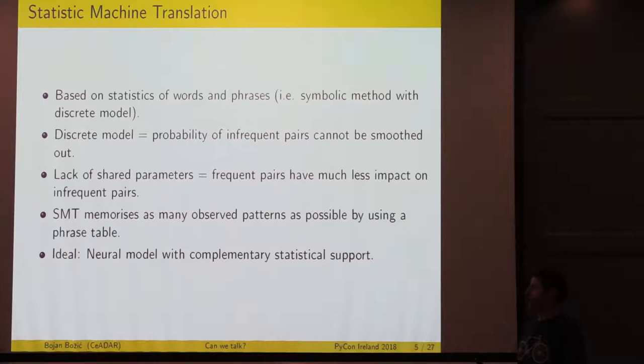There is no way to overlook infrequent pairs in general. The probability is still lower to translate infrequent words correctly, but still, you will always end up with at least some cases that would translate correctly, even for very infrequent words. SMT memorizes as a phrase table, like a dictionary. The idea is, why not just combine them and use a neural model with complementary statistical support. Why not be an experienced translator that from time to time looks into the dictionary to make sure infrequent words are translated correctly.